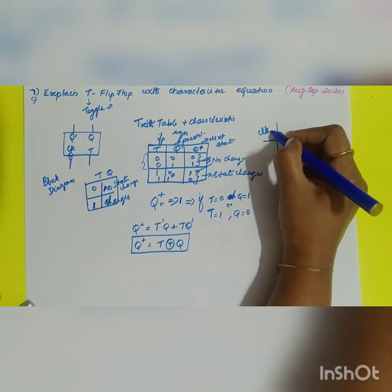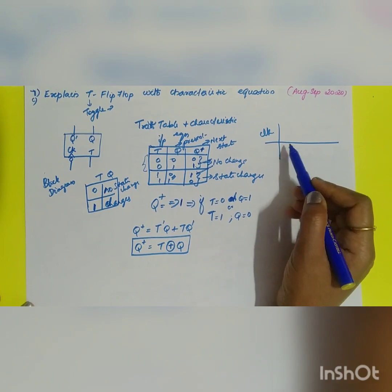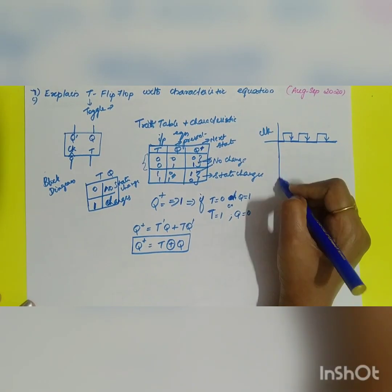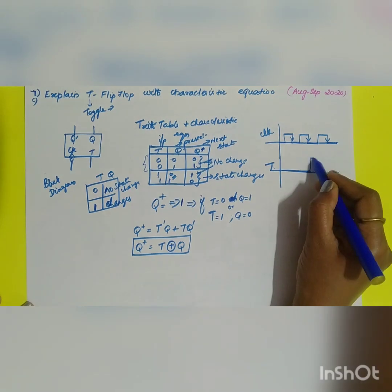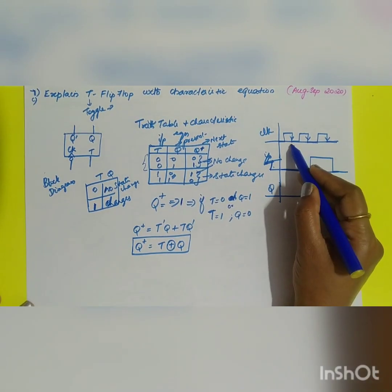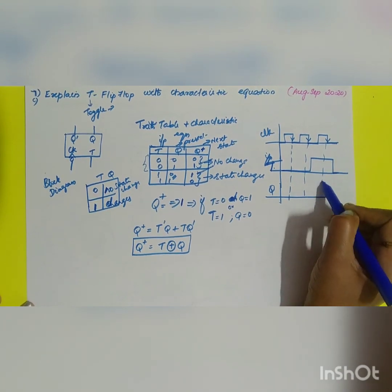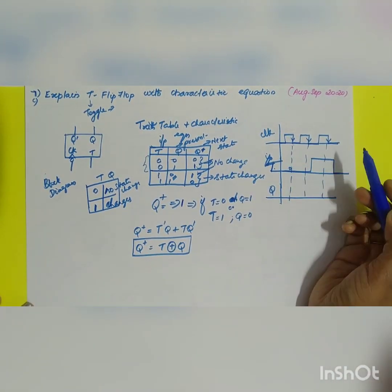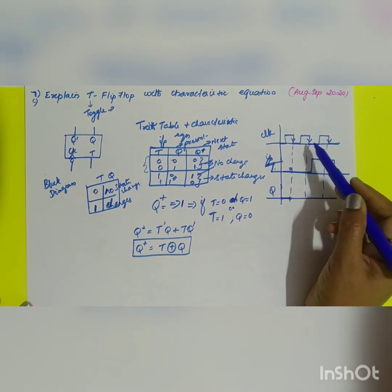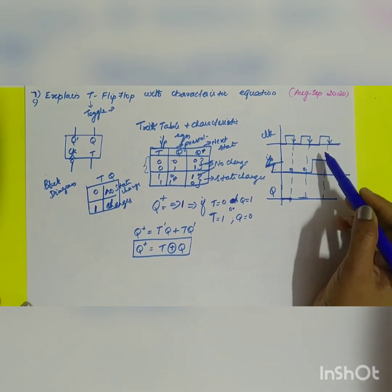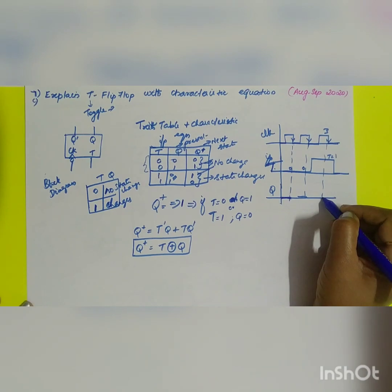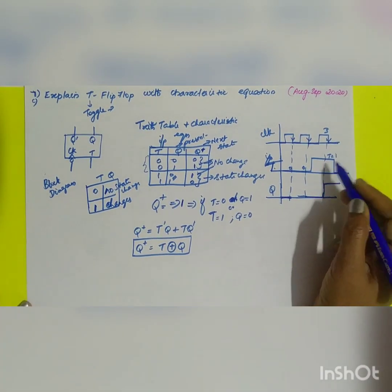Now for the timing diagram: in the block diagram, the clock has a bubble, so it is a negative-edge triggered clock, meaning it triggers on the falling edge. Taking input T: during the first falling edge T=0, so no change — output stays 0. During the second falling edge T=0 again, no change. During the third falling edge T=1, so the state changes from 0 to 1. This is the output of the T flip-flop.